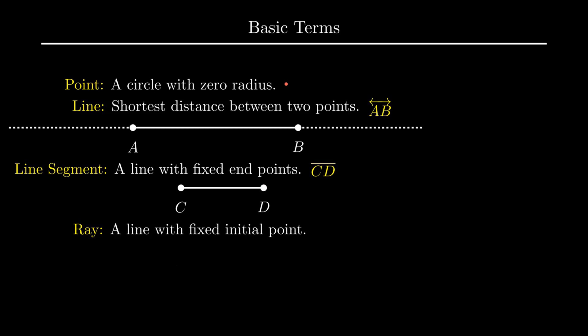Next term is called ray and is defined as a line with a fixed initial point that extends infinitely in one direction. Consider a ray OA with O as the initial point which can be extended infinitely in the direction of point A.